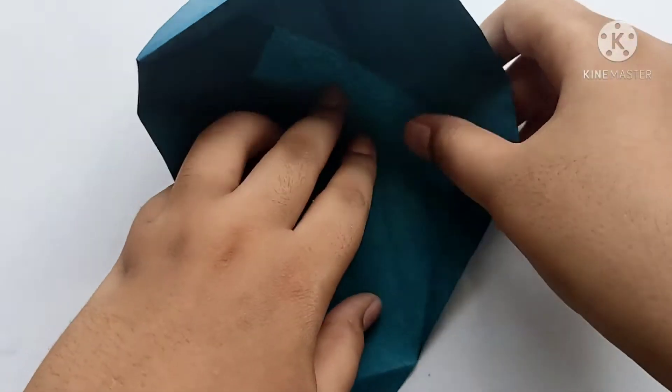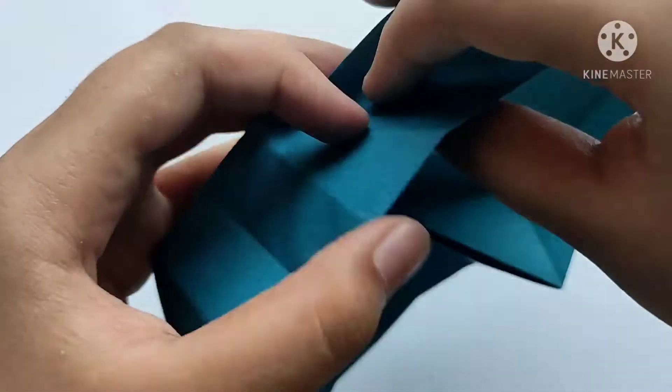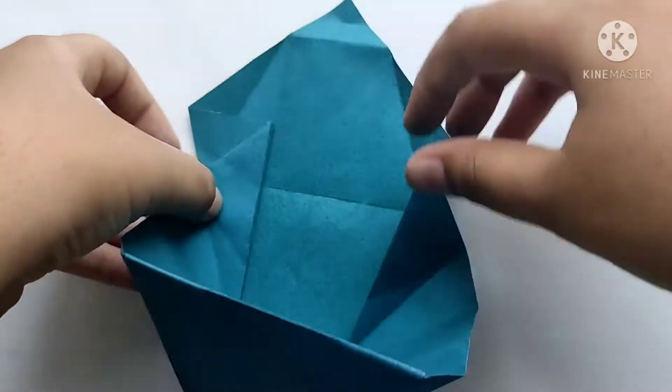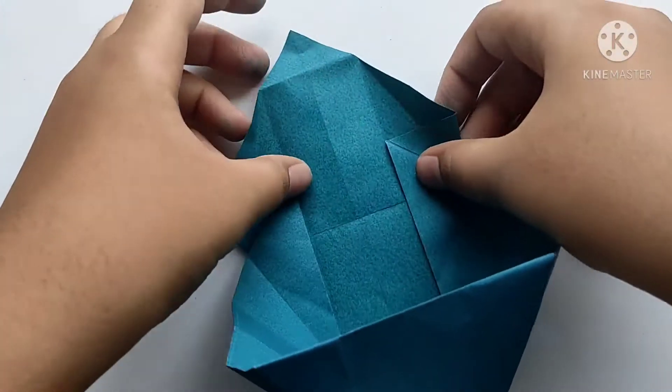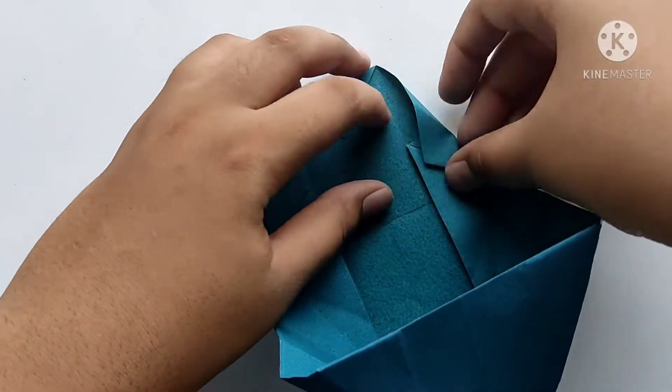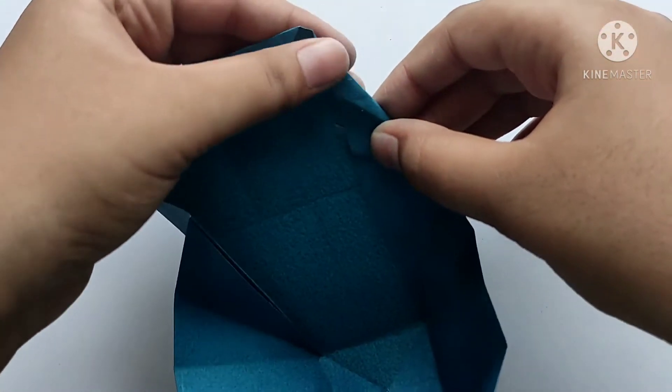Now we need to fold downwards like this and fold inside. After, we need to fold downwards like this and fold the same but now by leaving a gap to look it as a real head.